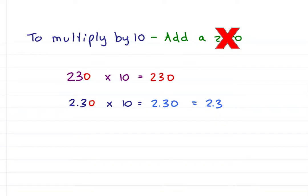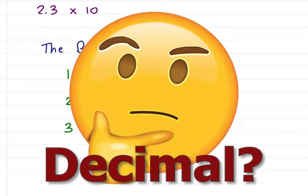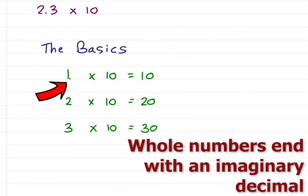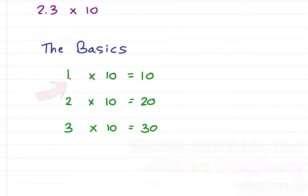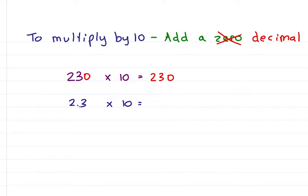To multiply by 10, you add a decimal space. But wait, what decimal? Every number has an imaginary decimal at the end. To multiply by 10, we move the decimal one space to the right, fill in any missing 0s. And so 1 times 10 gives me 10, 2 times 10 is one space to the right for 20, 3 times 10 gives me 30. And 2.3 times 10, move the decimal one space to the right for a final answer of 23.